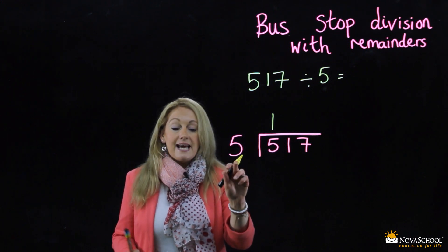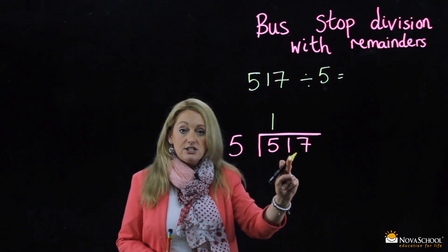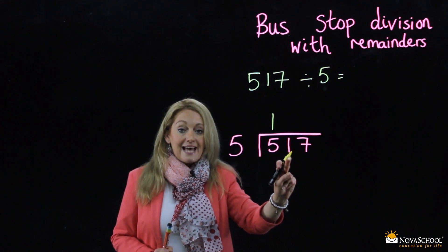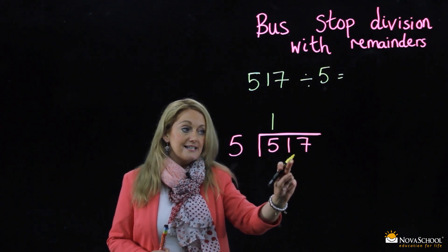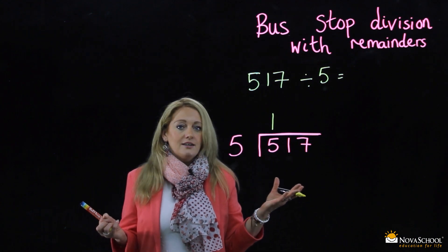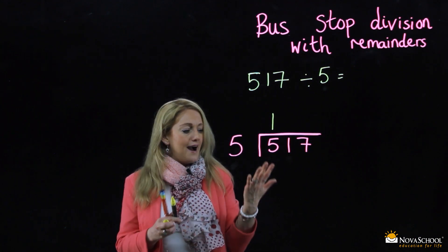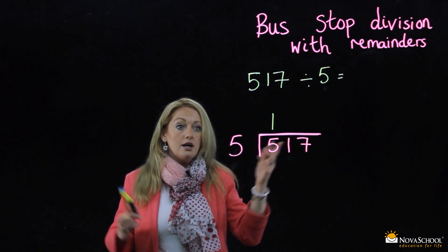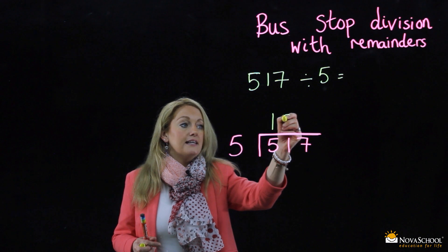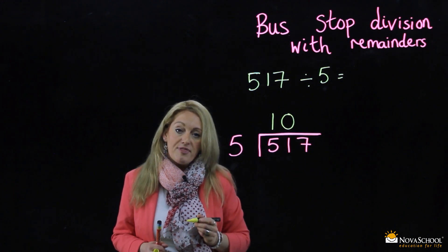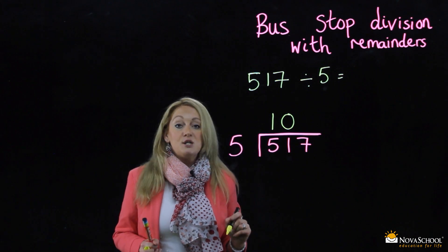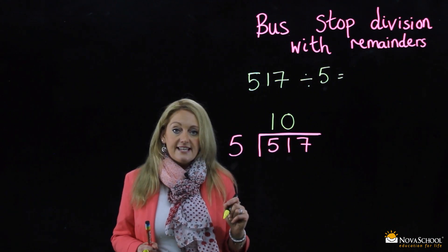Now I am going to take my five again and look at the next digit. The next digit is the one — the ten in five hundred and seventeen. But can five go into one? No, it can't. So five can't go into one. What do I do? I place a zero in my gap there, because I can't leave it empty. I need a placeholder. There's the zero.